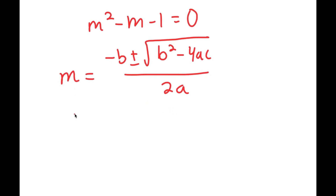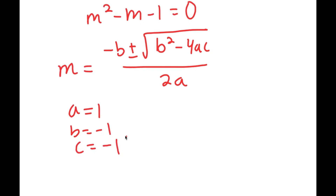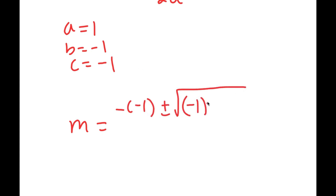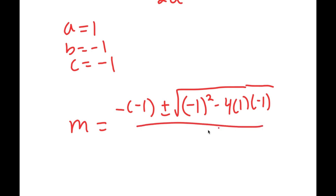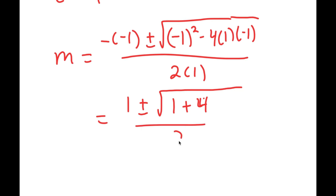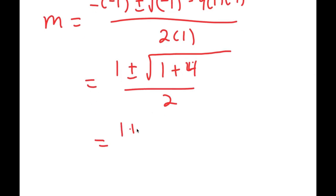The quadratic formula is negative b plus or minus the square root of b squared minus 4ac all over 2a. In this case, a is 1, b is negative 1, and c is negative 1. So I get m is equal to negative of negative 1 plus or minus the square root of negative 1 squared minus 4 times 1 times negative 1, all over 2 times 1. This turns into positive 1 plus or minus the square root of 1 plus 4 over 2, which is equal to 1 plus or minus the square root of 5 over 2.